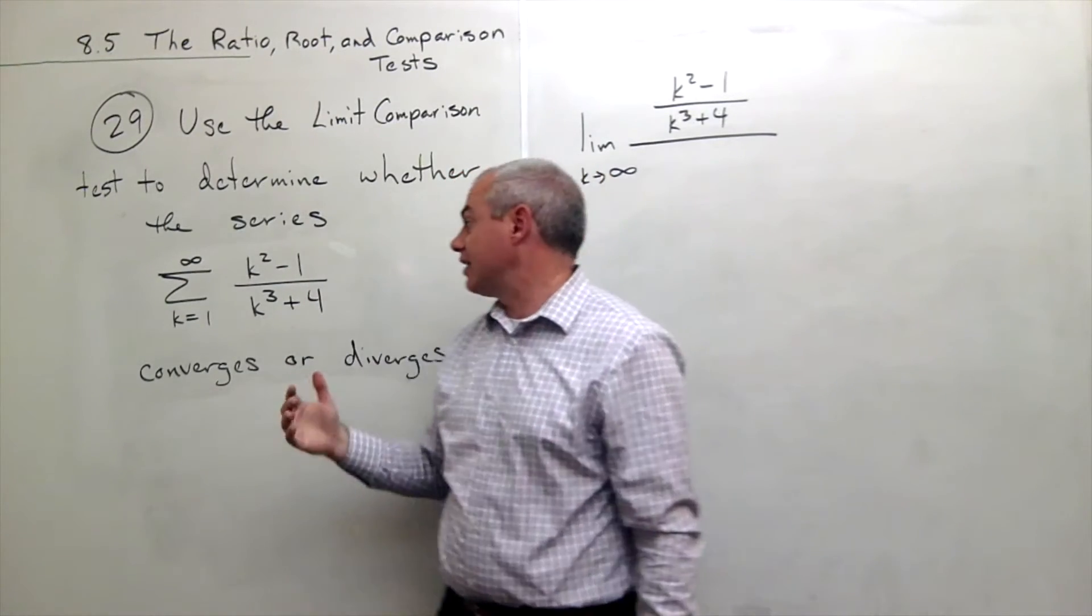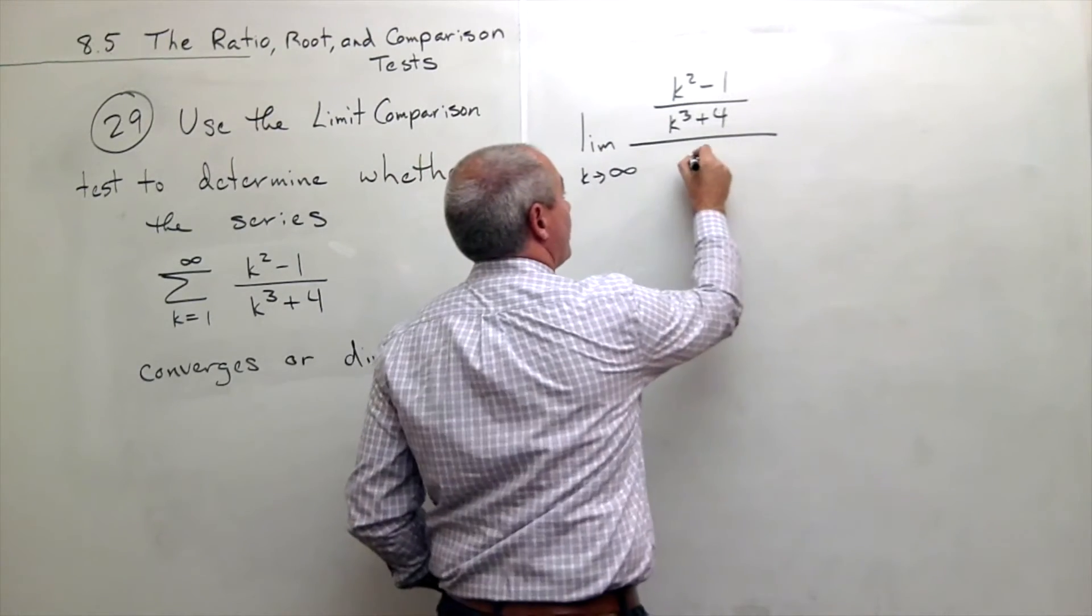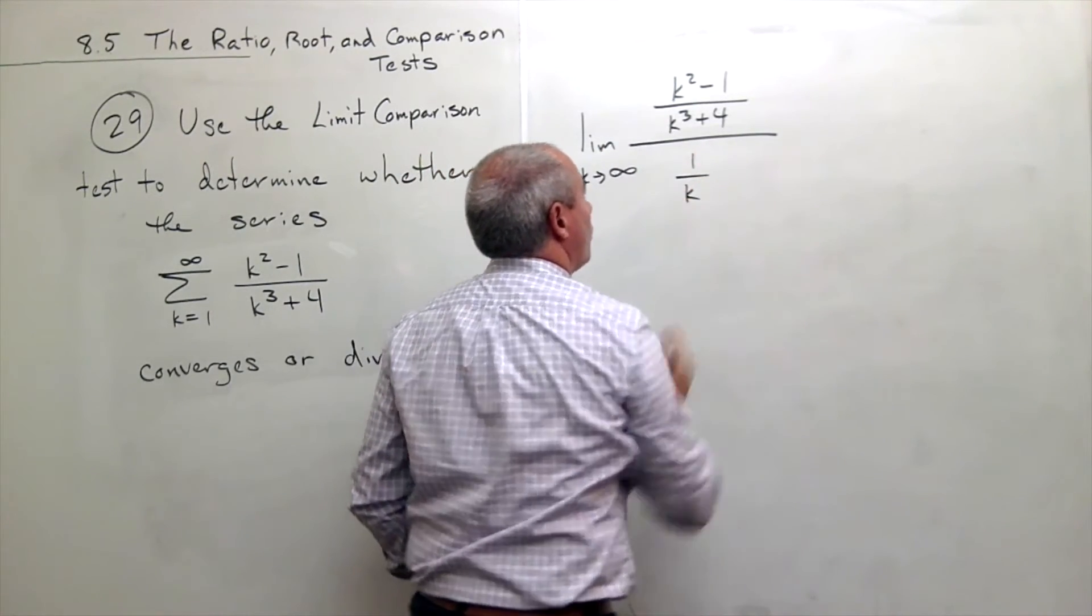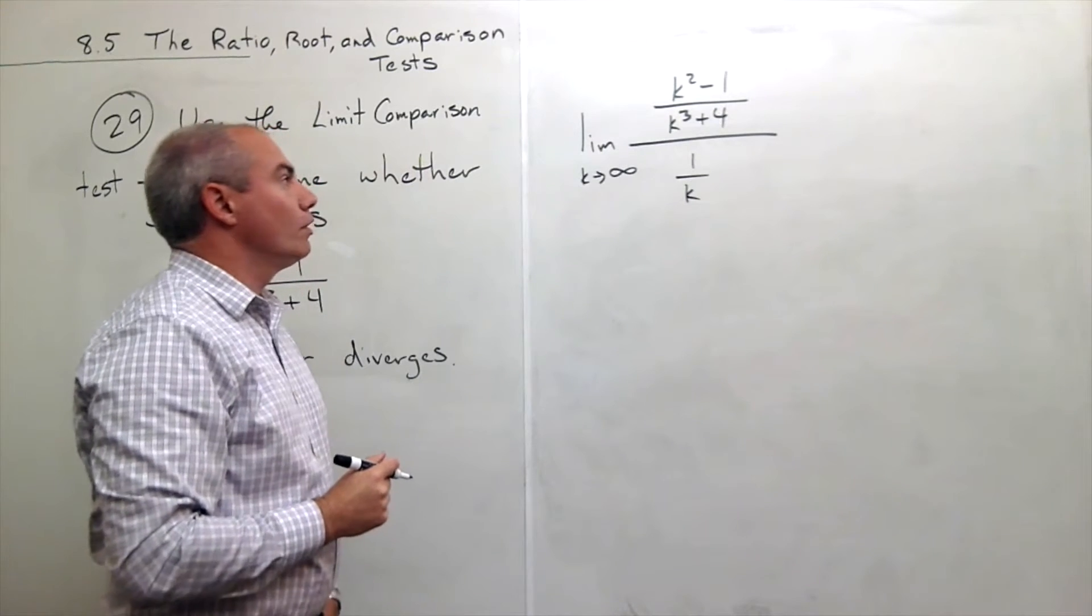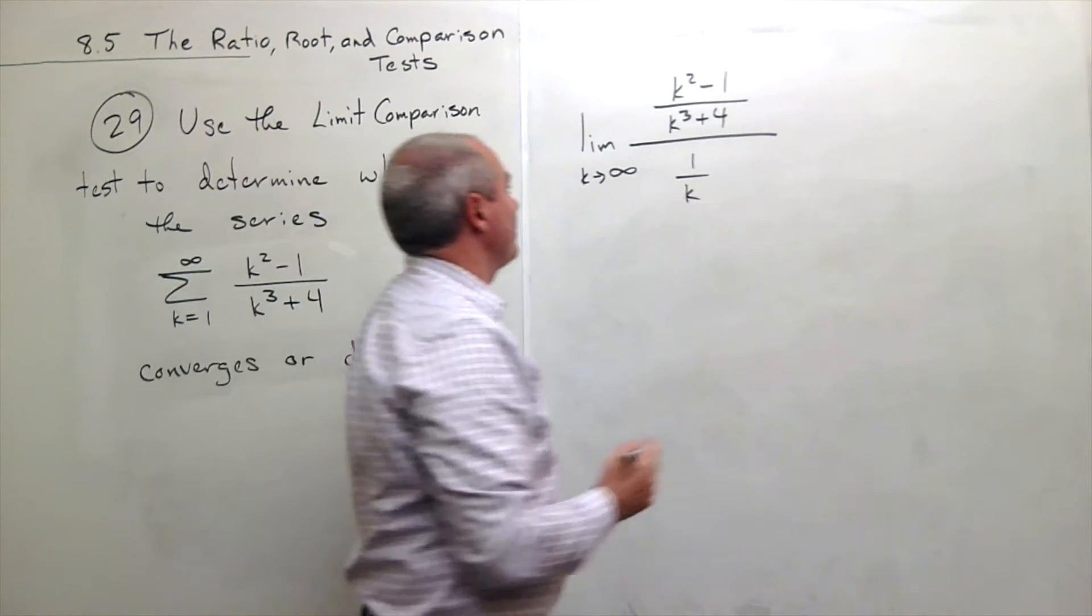And the one that I said this guy might kind of act like is 1 over k. So on the bottom I'm going to put 1 over k. Now let's take this limit and see what we get. So I take the limit,